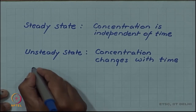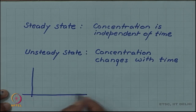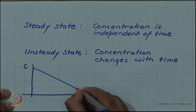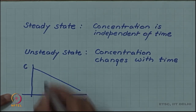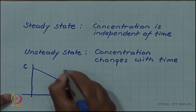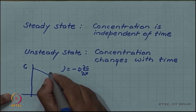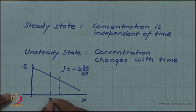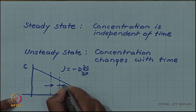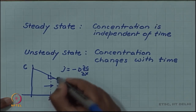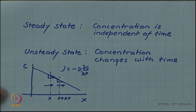We have seen, for example, in the one-dimensional case, if we have a concentration versus distance plot with a straight-line slope, then the flux will be constant, given by Fick's first law. If we take any volume between x and x plus delta x, the flux entering will equal the flux leaving because the slopes are constant. There will be no accumulation of material in this volume, so the concentration will remain constant. This is an example of steady state.